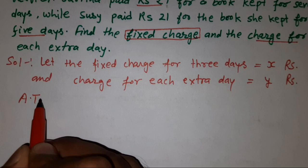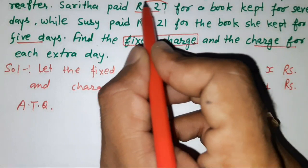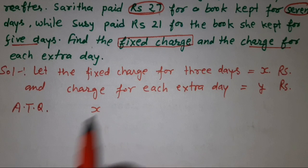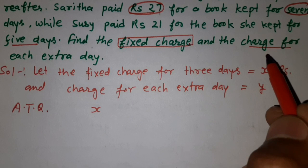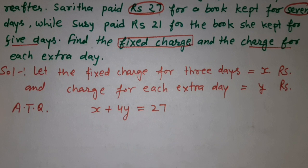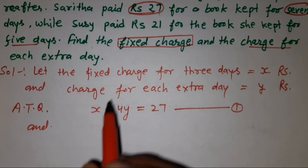Question के according: Sarita paid 27 rupees for 7 days। 7 days में पहले 3 days का charge = x। 7 में से 3 minus करेंगे तो 4 extra days बचे, एक दिन का y लग रहा है तो 4 days का 4y। Total = 27, so equation 1: x + 4y = 27।